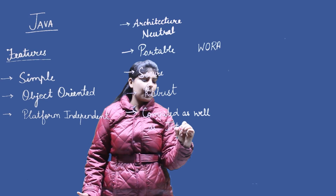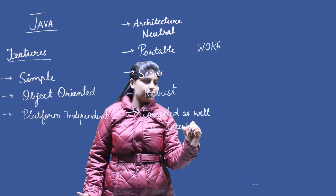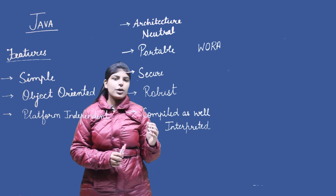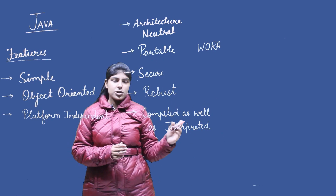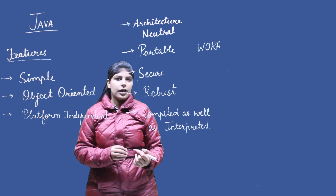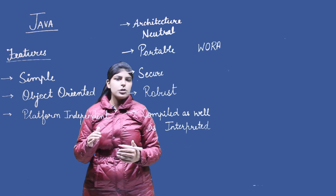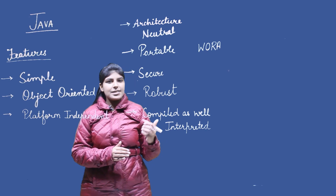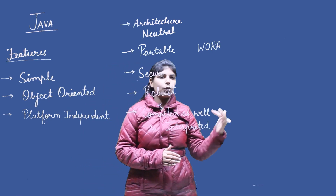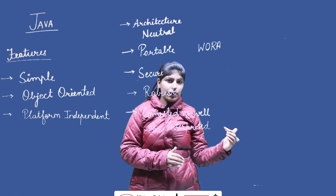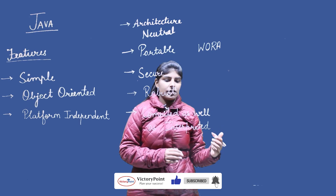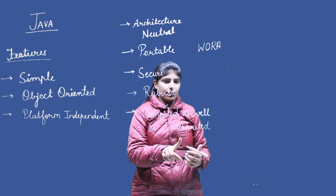A compiler directly converts the full source code to machine code, whereas an interpreter converts it line by line. In Java, we first use a compiler to convert the high-level code to bytecode, and then inside the JVM it is executed line by line. That's why Java is both a compiled and interpreted language.